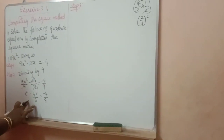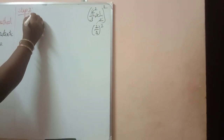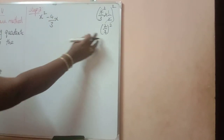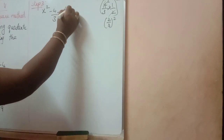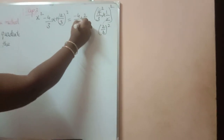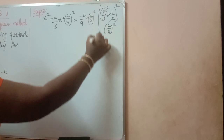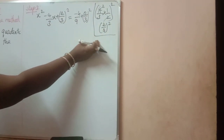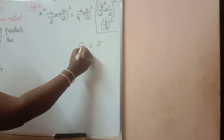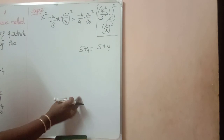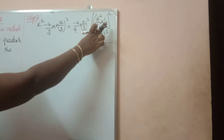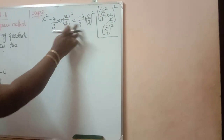Write the same term: x square minus 4 by 3 x, plus 2 by 3 the whole square. We have to add it here. Equal to: right-hand side minus 4 by 9, plus 2 by 3 the whole square. The value should not change — that is why we are adding the same term on both sides. For example, 5 equals 5: if you add 4 here, you have to add 4 here too. So the same we are doing here: coefficient of x into half the whole square, 2 by 3 the whole square, adding on both sides.